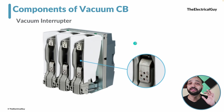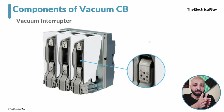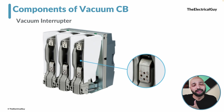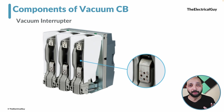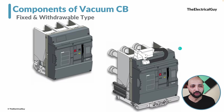For this type of vacuum circuit breaker there are two different variants available. One is the fixed type circuit breaker, and another is the withdrawable type circuit breaker. The fixed type means that once you put this circuit breaker inside the panel, it will remain fixed in the same position. The withdrawable type means you can take the circuit breaker out of the panel to carry out maintenance activities. The architecture of both circuit breakers is different and can be seen visually as well.